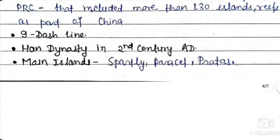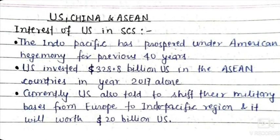Regarding US, China, and ASEAN involvement: the Indo-Pacific region has prospered under American hegemony for the past 40 years. This includes Southeast Asian countries, Japan, Taiwan, Philippines, and South Korea. The US made South Korea a democratic country and Philippines was also once a US colony. America provides military support through mutual defense treaties, giving assurance to Philippines, Japan, and Taiwan for their defense and security.